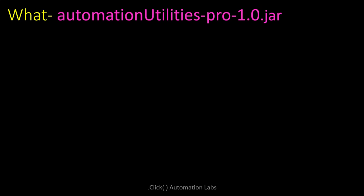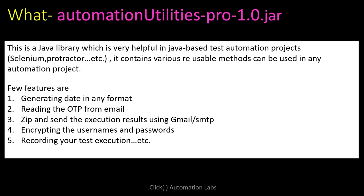First, we'll discuss what Automation Utilities Pro 1.0.jar is. This is a Java library that will be very helpful in Java-based test automation projects — for example, Selenium, Protractor, and others. It contains various reusable methods that can be used in your automation projects.